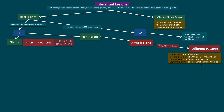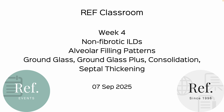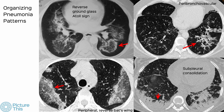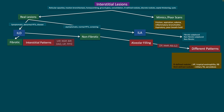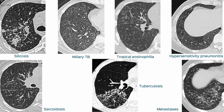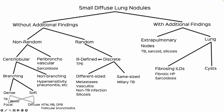Week four covers alveolar filling patterns — ground glass, ground glass plus, with new entities like AMP and LP (lipoid pneumonia). OP now has two subcategories: AFOP and CIOP. The three signs are ground glass, consolidation, and septal thickening, which together give the various organizing pneumonia patterns. Week five looks at ill-defined and well-defined nodules — alveolar filling and other patterns — using a flow chart I made two to three years ago that I use in practice.